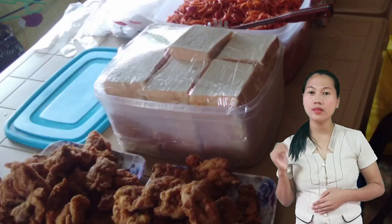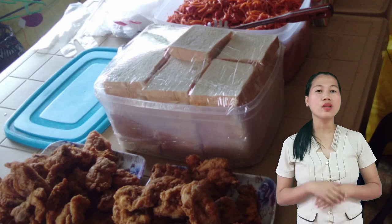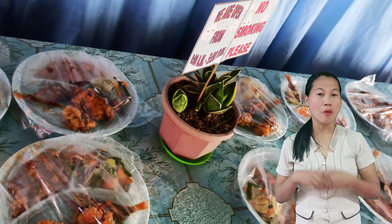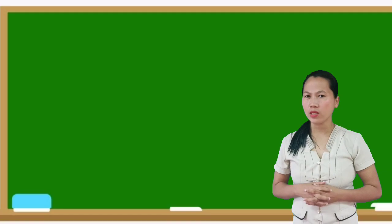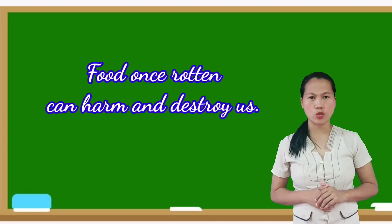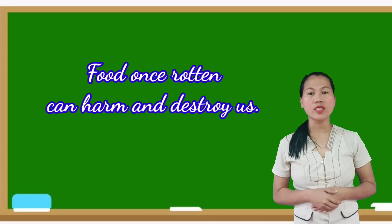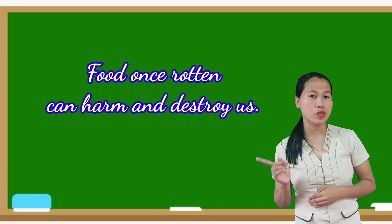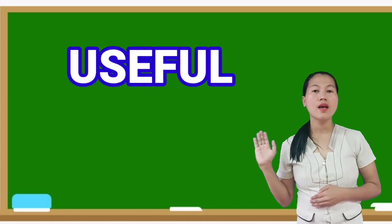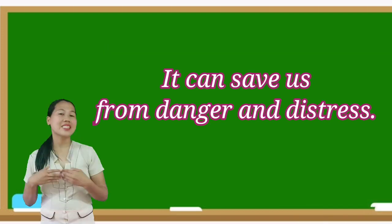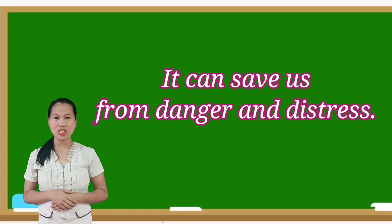For example, it has all the food that we eat to get the nutrients and energy in order to live. However, food once spoiled can harm and destroy us. That is why it is important to know how to distinguish useful from harmful materials. It can save us from danger and distress.